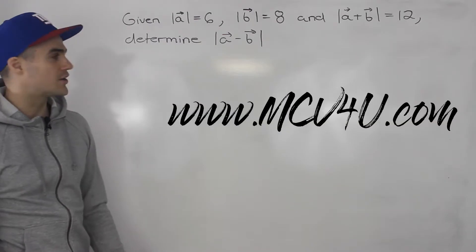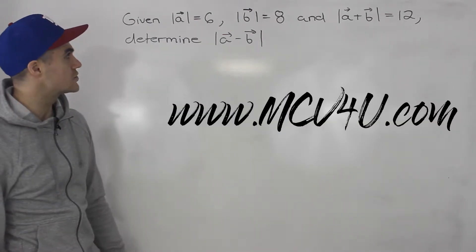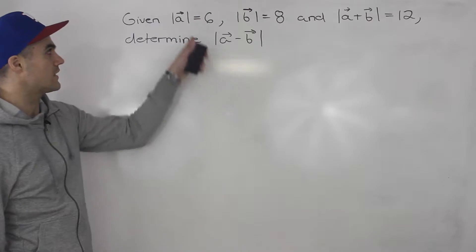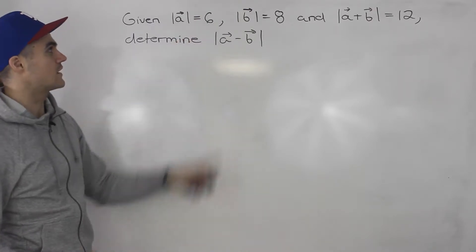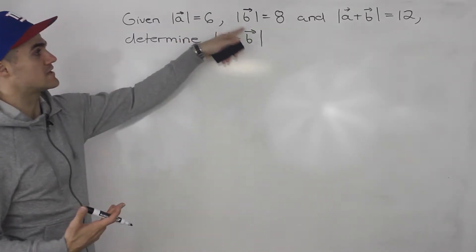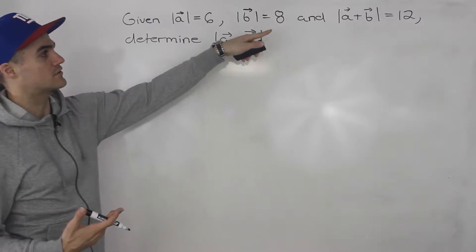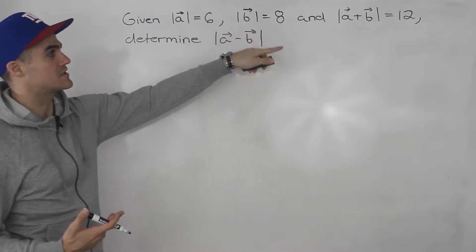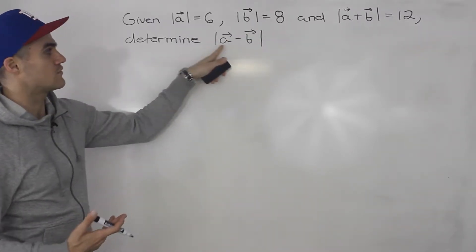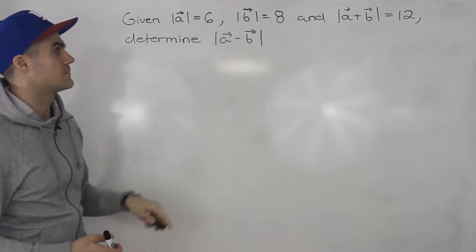Welcome back everybody, Patrick here. Moving on to another question dealing with vectors. Given that the magnitude of vector a is 6, magnitude of vector b is 8, and the magnitude of vector a plus b is 12, we have to determine the magnitude of a minus b.